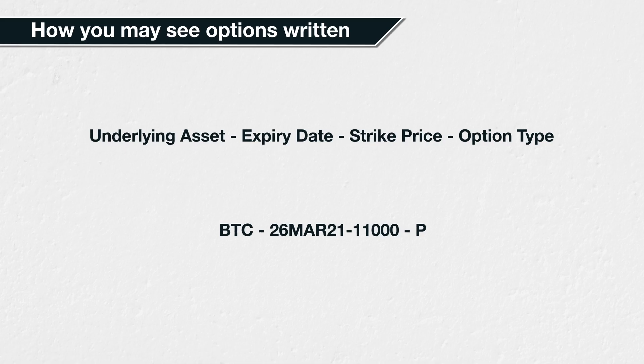The final of the five parameters — the option price — will be displayed in the option chain and in the order book for each option. More on this later.